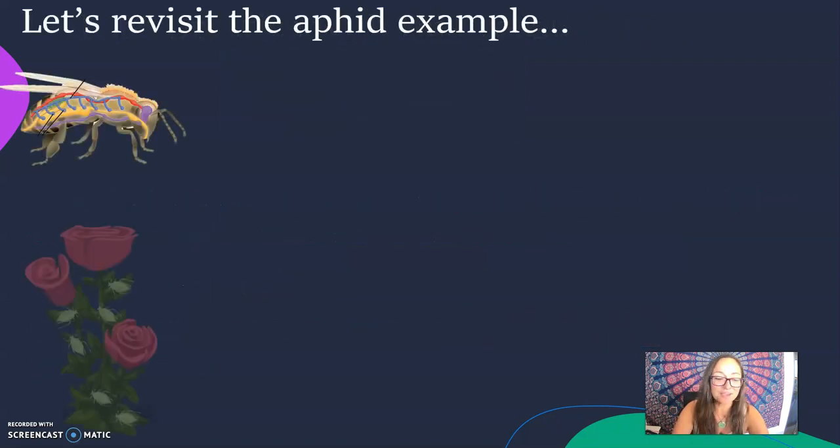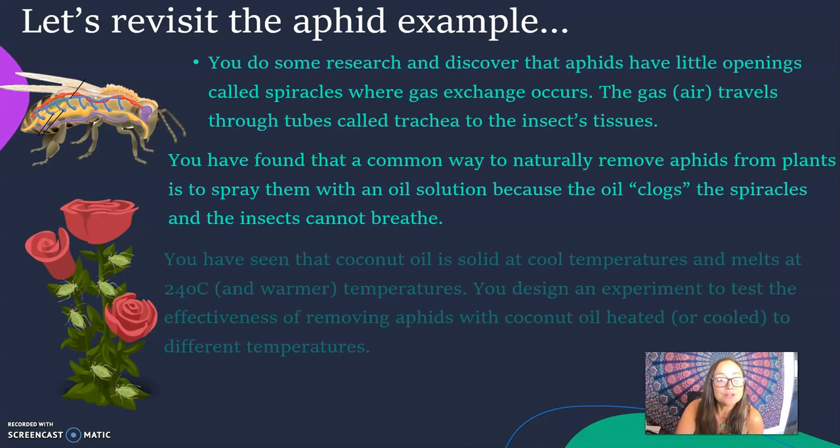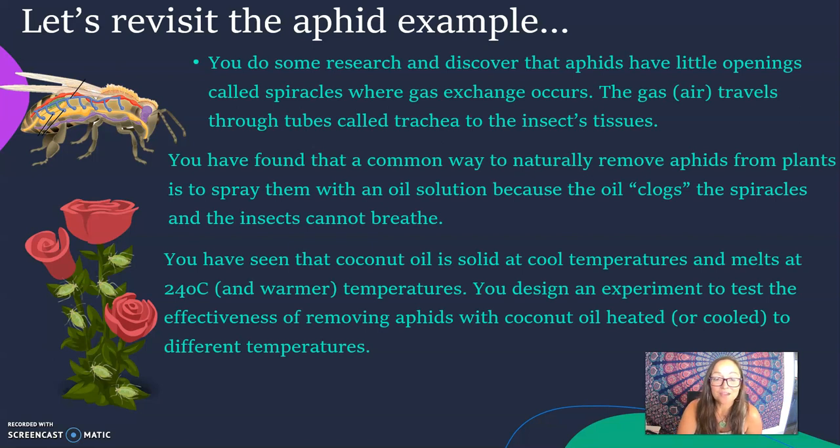So let's go ahead and go back to that aphids example. With aphids, you do some research and you find out that they actually breathe through little holes in their bodies called spiracles. You're curious. You did research and found that when you spray them with oil, because the oil solution will block the holes that they breathe through in their bodies. And so you decide to come up with an experiment using coconut oil because you know that when coconut oil is cool, it's a little thicker. It actually melts at 24 degrees Celsius, and when it's hotter it's more liquid. So you're curious, does the thickness of oil matter? Is one temperature more effective than another?